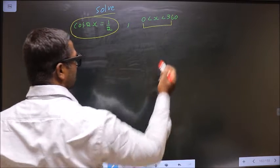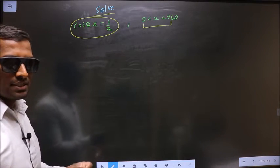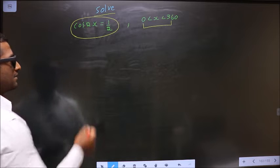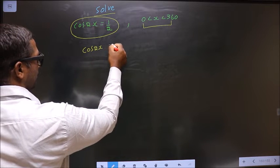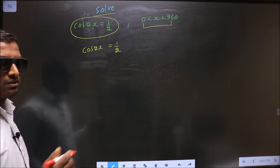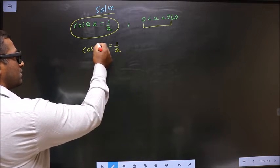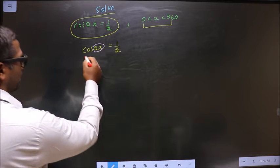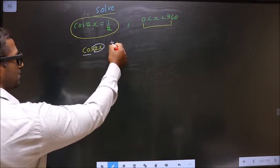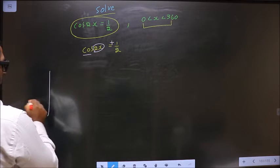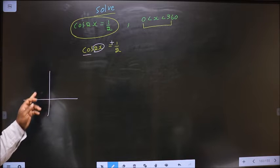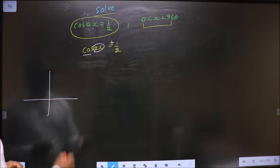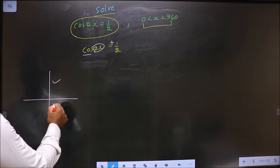The given equation is cos 2x equals 1/2. To get the values for 2x, note it is cos and it is positive. Check in what quadrants cos is positive. It's all silver tea cups, so cos is positive in the first and in the fourth quadrant.